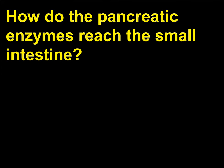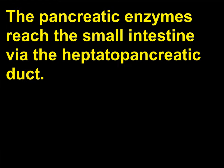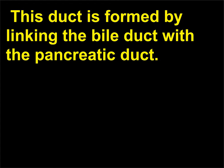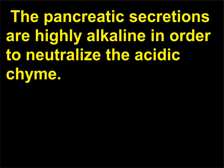How do the pancreatic enzymes reach the small intestine? The pancreatic enzymes reach the small intestine via the hepatopancreatic duct. This duct is formed by linking the bile duct with the pancreatic duct. The pancreatic secretions are highly alkaline in order to neutralize the acidic chyme.